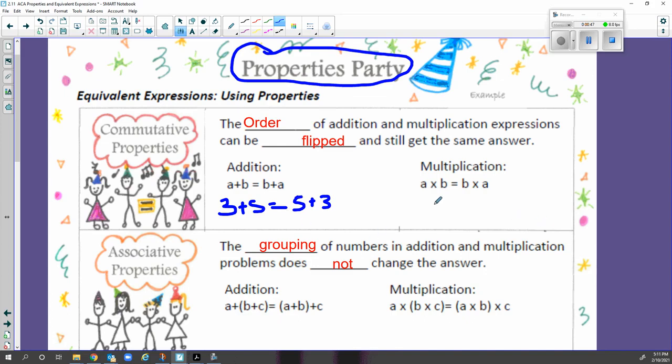In multiplication, it's the same thing. If we do 8 times 4, that's the same as 4 times 8. Both of those answers are going to give us 32. It doesn't matter the order.